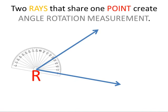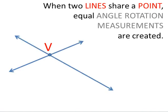Two rays that share one point create angle rotation measurement. When two lines share a point, equal angle rotation measurements are created.